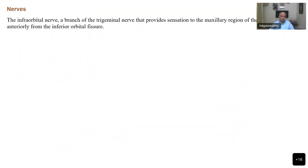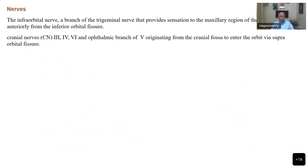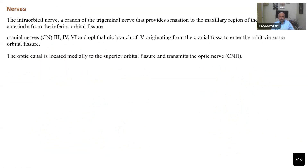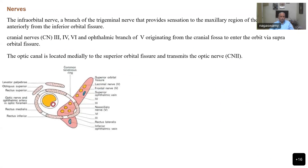From the nerves within the orbit, a branch of the trigeminal nerve provides sensation to the maxillary region of the face, crossing anteriorly from the interior of the tissue. Cranial nerves 2, 3, 4, and branches of 5 and 6 all come into the orbit. The optic canal is located in the sphenoid and transmits the optic nerve. The lacrimal nerve is a branch of the ophthalmic division. Both the third cranial nerve and other nerves pass through the annular ring into the orbit.